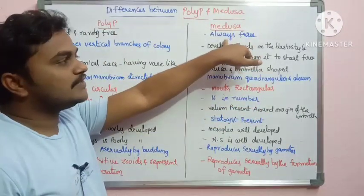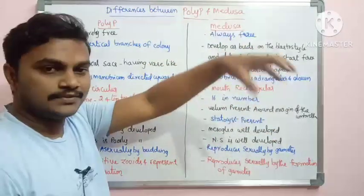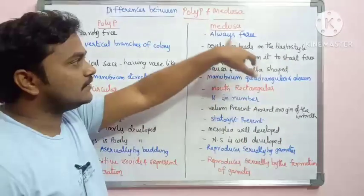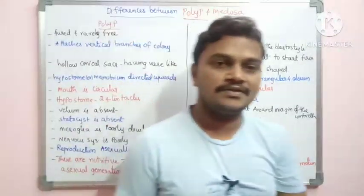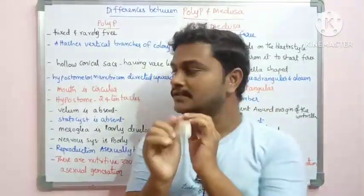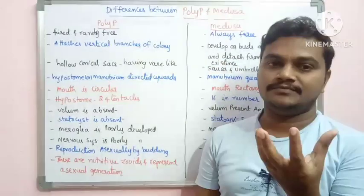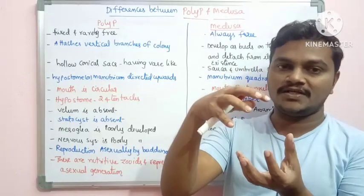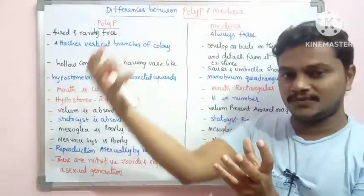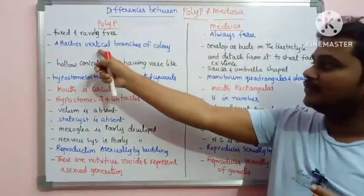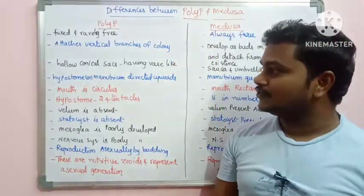Medusa is always free. Medusa develops as buds on the blastostyle. The blastostyle is located in the colony. Medusa attaches and detaches from the blastostyle, which is located in particular branches of the colony.